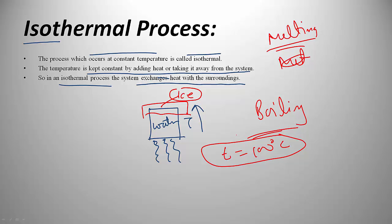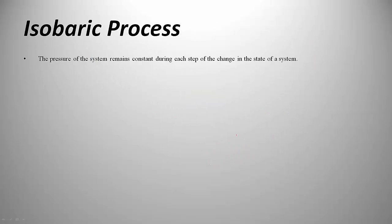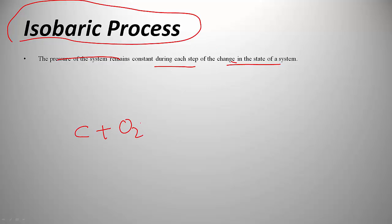Next is isobaric. If pressure of the system is constant, it is called isobaric. For example, carbon is burning to form carbon dioxide inside a container with a movable piston.